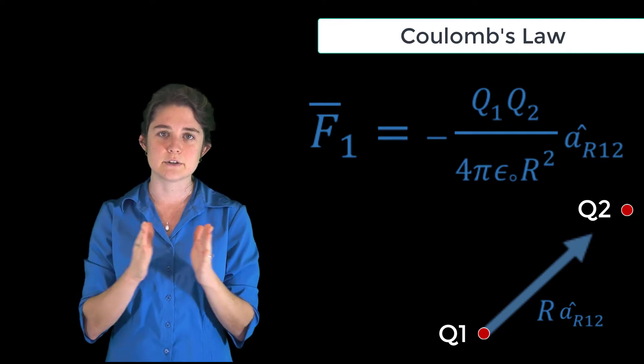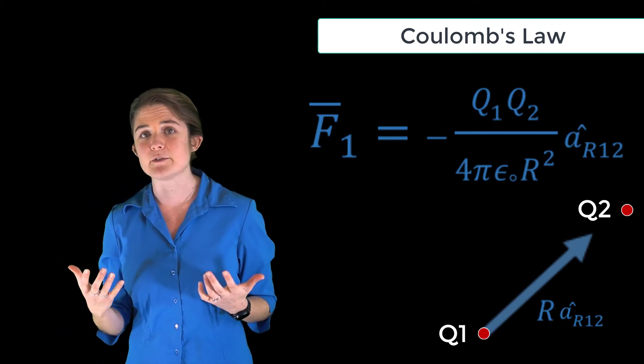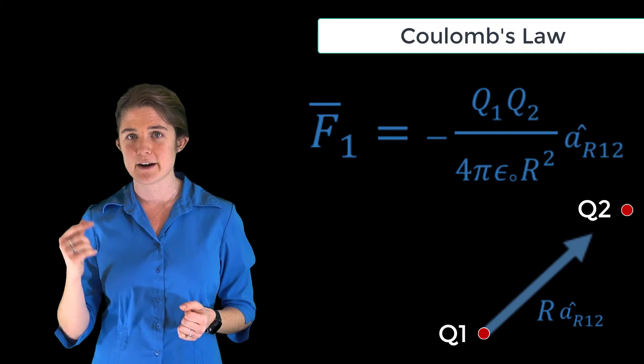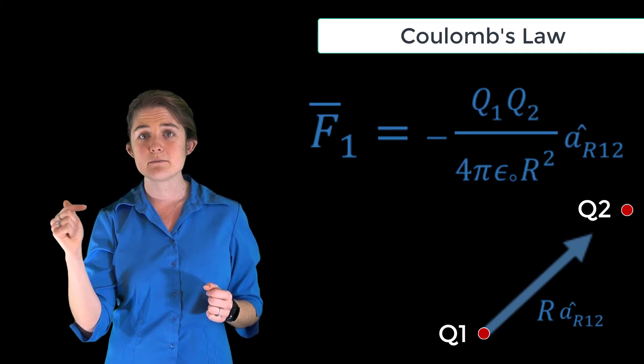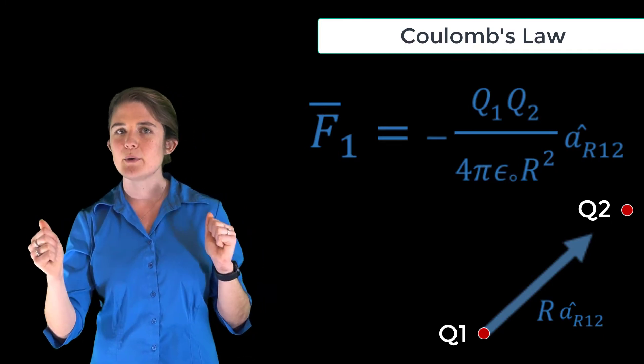The direction of the force, indicated by the unit vector ar12, is pointing in the direction from charge 1 to charge 2. Note that if q1 and q2 have opposite signs, the force will be positive indicating attraction. If q1 and q2 are both positive or both negative, the force will be negative indicating repulsion.